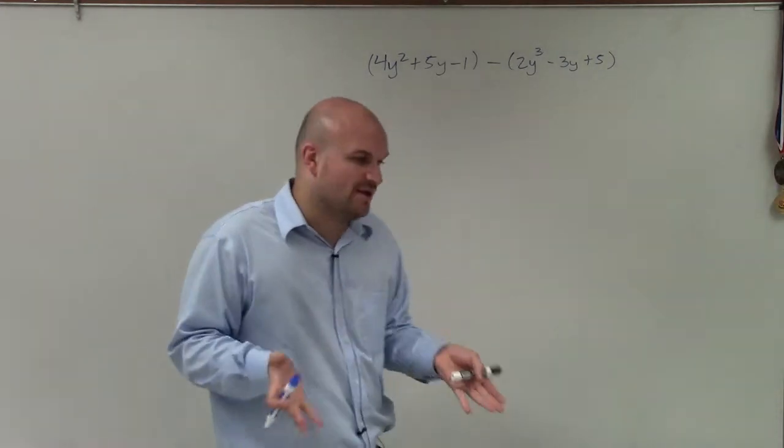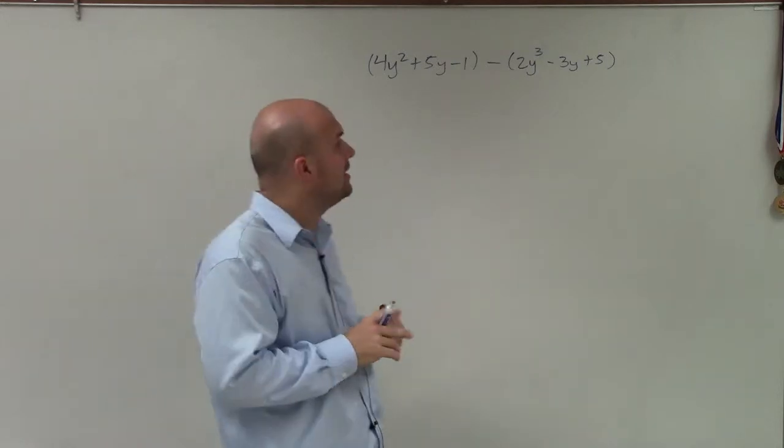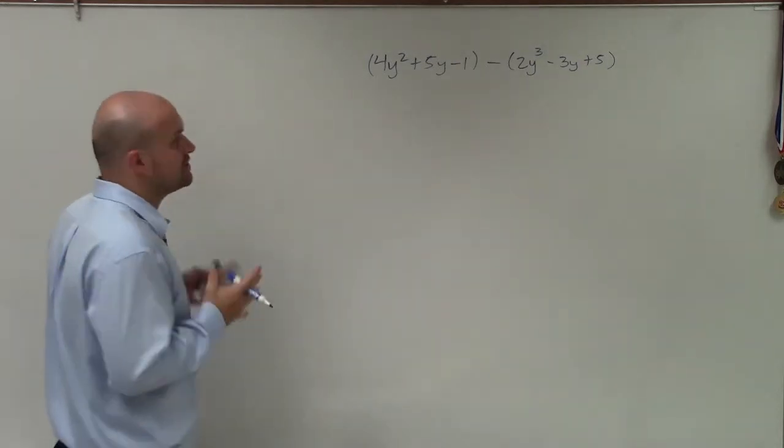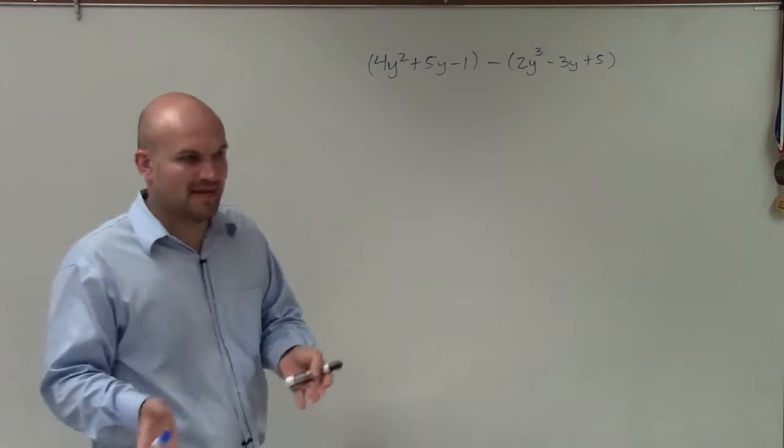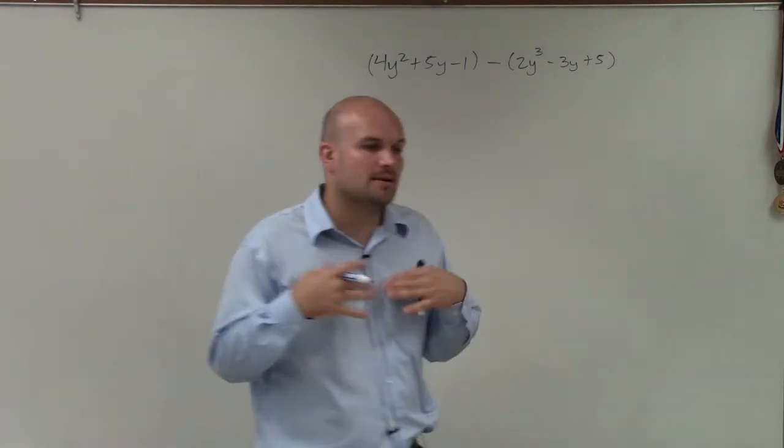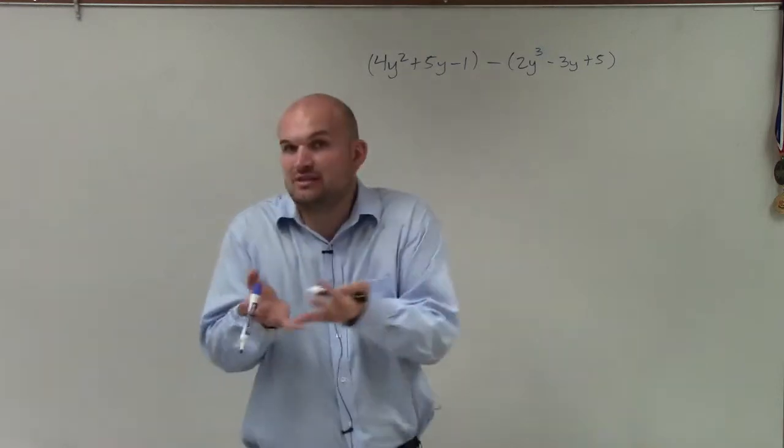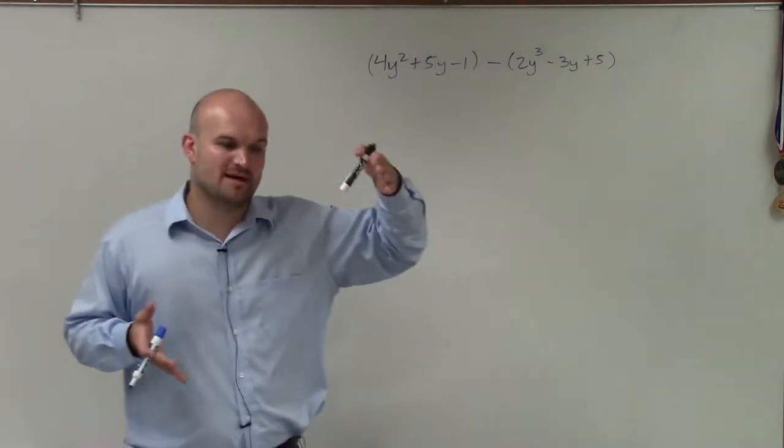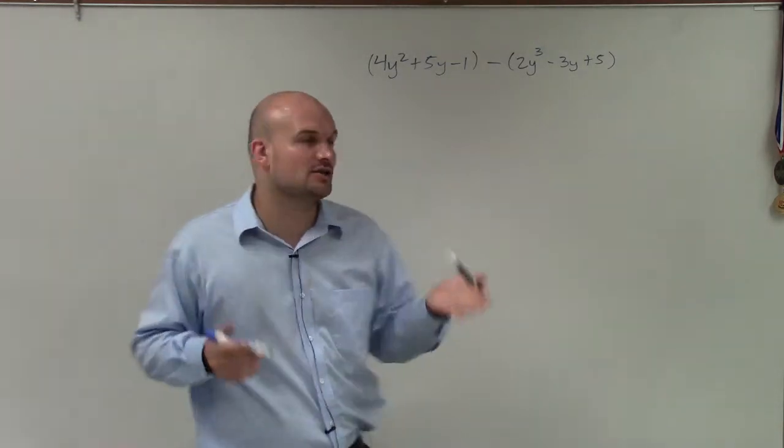To do this, there's a couple different ways we can approach it. One way I'm going to use is what we call the vertical method. Because whenever we're combining, adding, or subtracting polynomials, we can only combine when they're like terms. So when I use the vertical method, I'm aligning the like terms together.